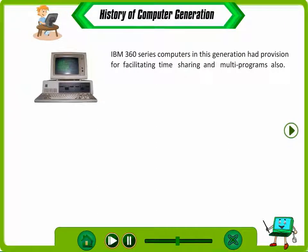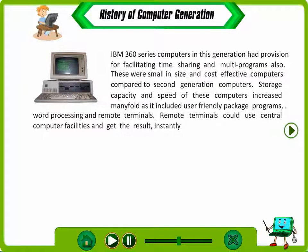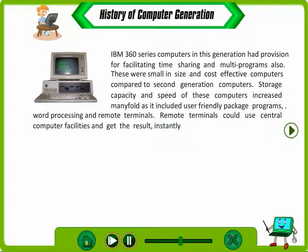IBM 360 series computers in this generation had provision for facilitating time-sharing and multi-programming. These were small in size and cost-effective compared to second generation computers. Storage capacity and speed increased many fold, and they included user-friendly package programs, word processing and remote terminals.